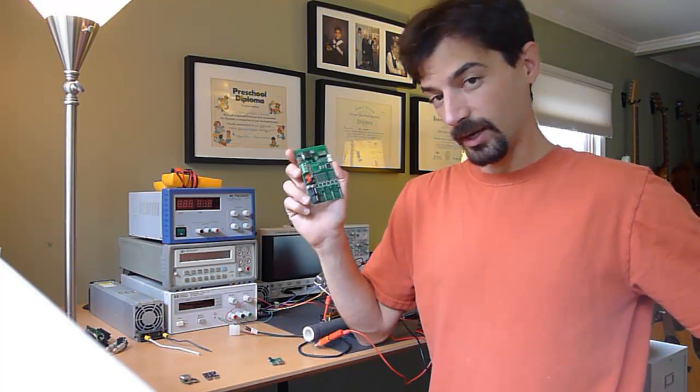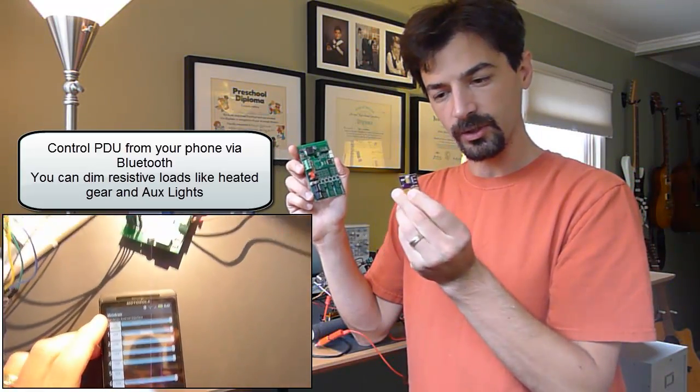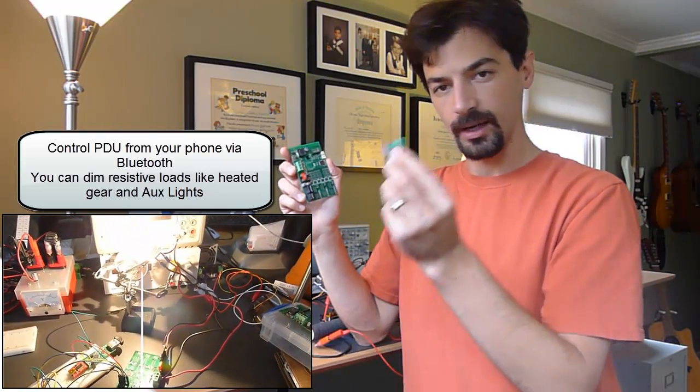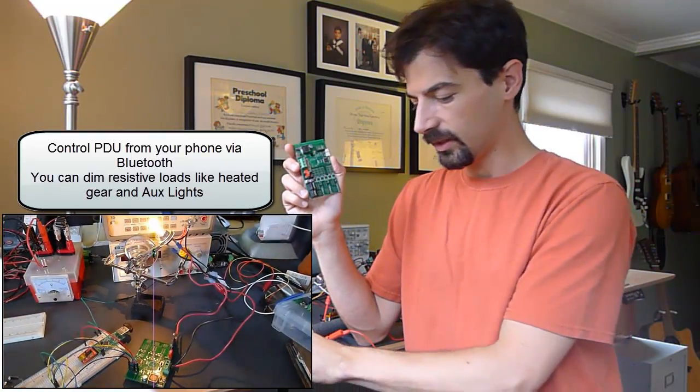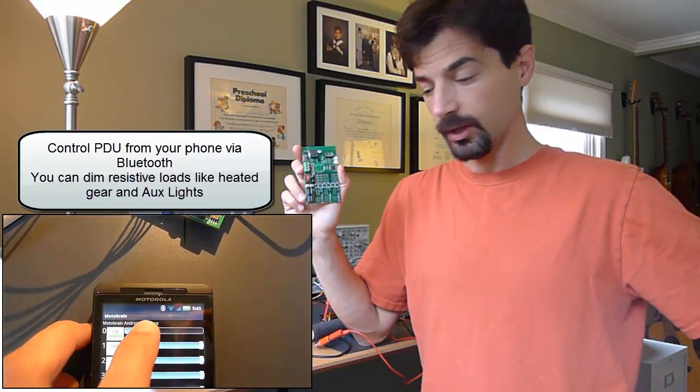The cards are also the main outputs for power. We have this guy here, which is a low side switching card. We've got high side switching card, which means it's the 12 volts to turn on and off on the low side. It's the ground that turns on and off.